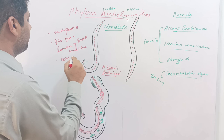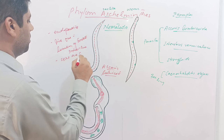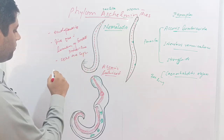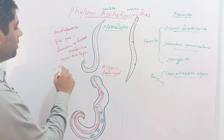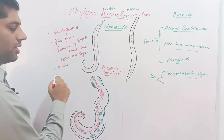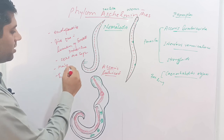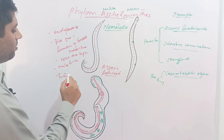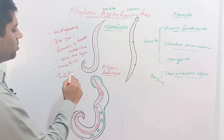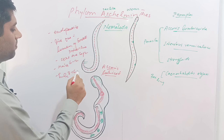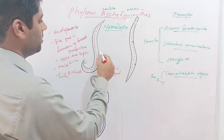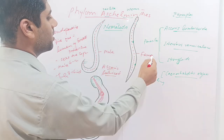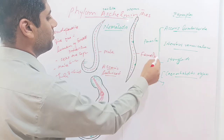Sexes are separate in Ascaris lumbricoides. The male is smaller and the female is larger. The size of the male is 6 to 12 inches while the size of the female is 8 to 16 inches. This diagram shows the male and this is the diagrammatic representation of the female.